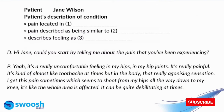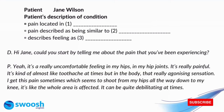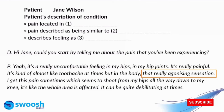Now let's look at the audio transcript and see if we can get the answers for these first three questions. For number one, the patient says 'it's a really uncomfortable feeling in my hips, in my hip joints' — so the answer is hip joints. For number two, they say 'it's kind of almost like toothache,' so instead of saying 'the pain is similar to toothache,' the patient paraphrased it. Thinking about synonyms really helped us identify that answer. And number three — 'describes feeling as' — the adjective we were looking for was agonizing.